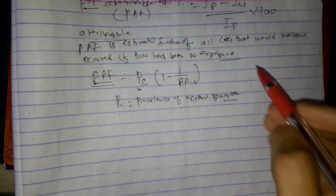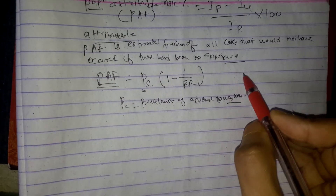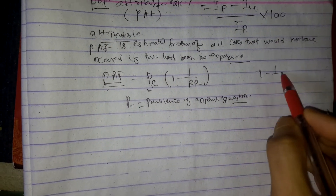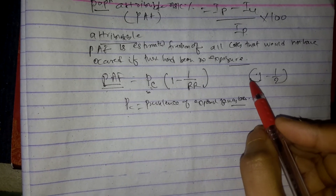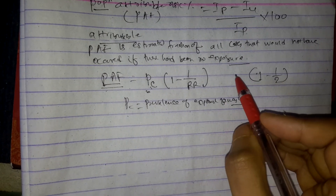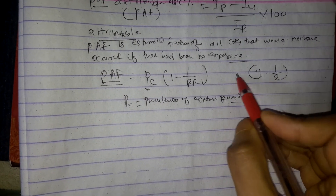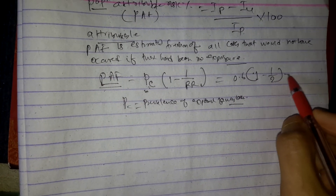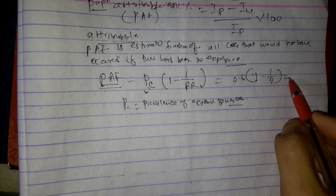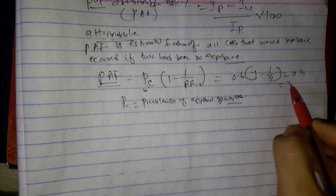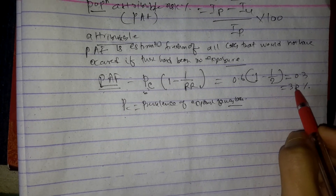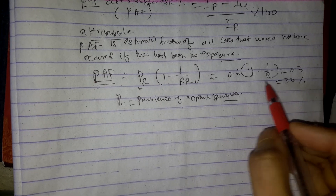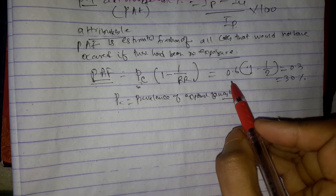Suppose a particular exposure doubles the risk of a certain outcome, so relative risk equals 2. Then one minus one divided by two equals 0.5. If the prevalence of exposure among cases is 0.6, then population attributable fraction equals 0.6 × 0.5 = 0.3, or 30%.